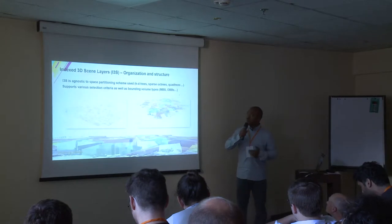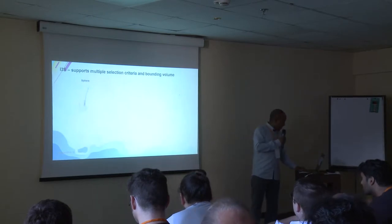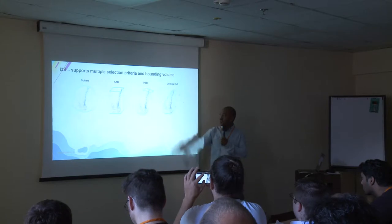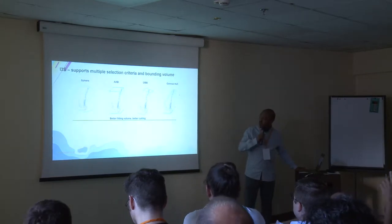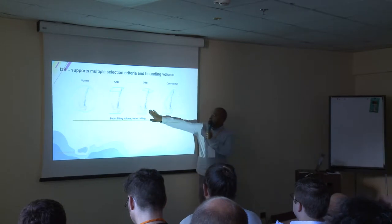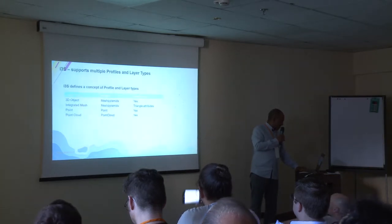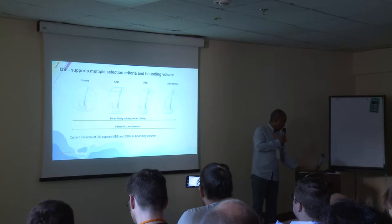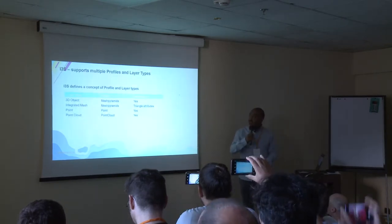The format allows you to define multiple bounding volume criteria, letting you balance performance or ease of use. Minimum bounding spheres are easy to use — as long as content is bound within that sphere, you can render it — whereas OBBs are more conservative in what you're fetching, meaning you don't fetch buildings that aren't required. The current version of i3s supports MBS and OBB, and in the future more compact forms like convex hulls may be supported.